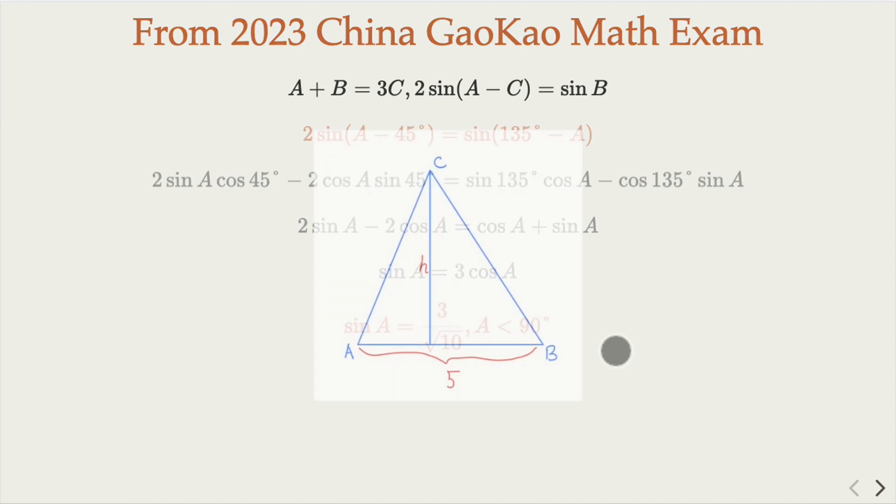Now let's go to the second part. Given that the base AB has length 5, what is h? We already know the special angle value here. C is 45 degrees. A and B we don't know, but we try to find h.